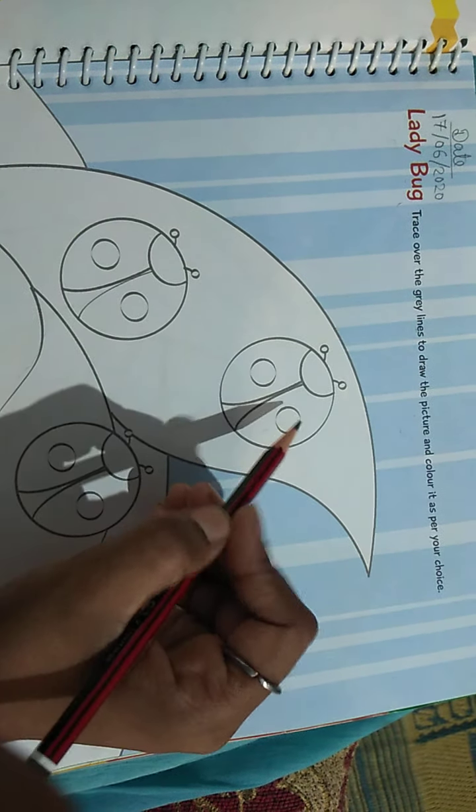What the question is said? Trace over the gray lines. You have to trace over the gray lines with the help of pencil. You will trace this with the help of pencil so that it will highlight.